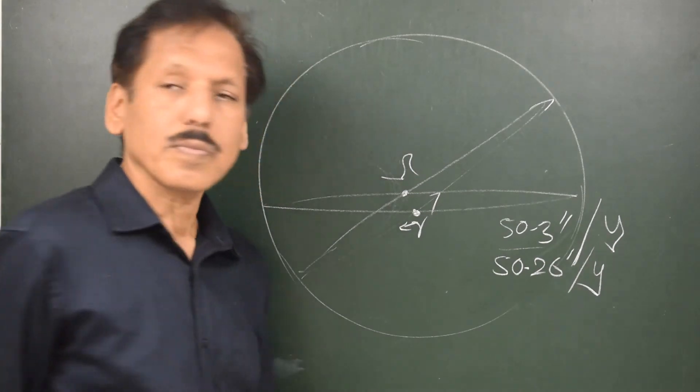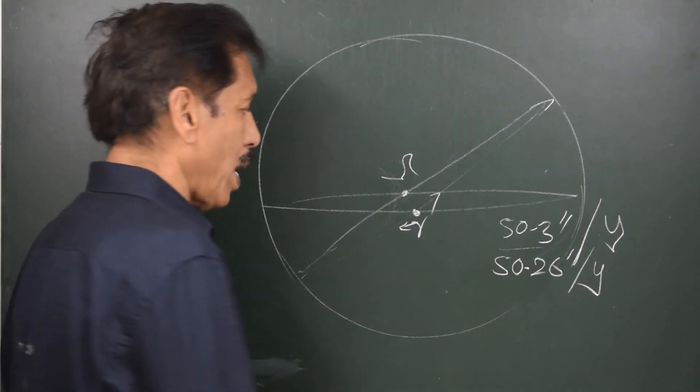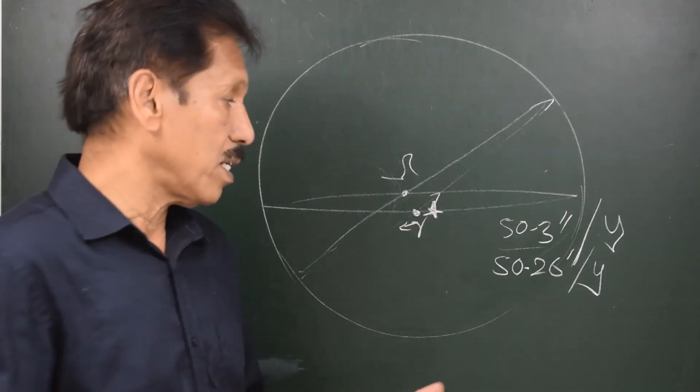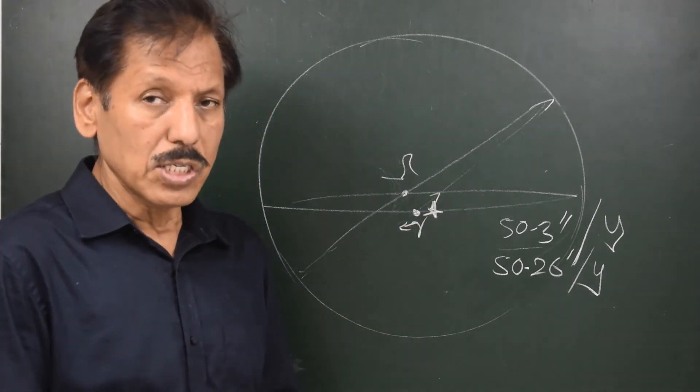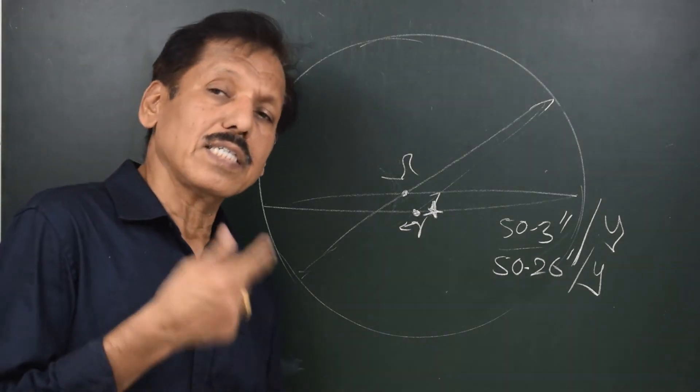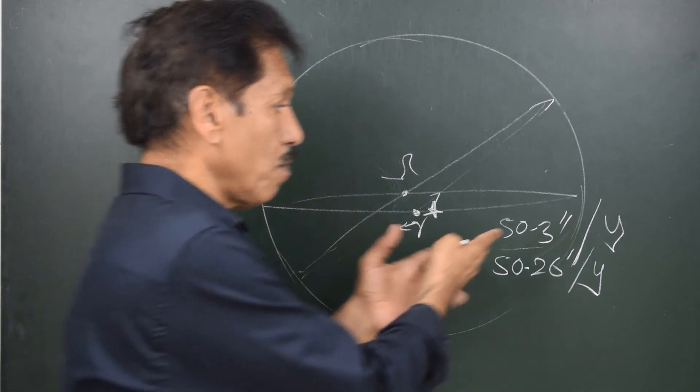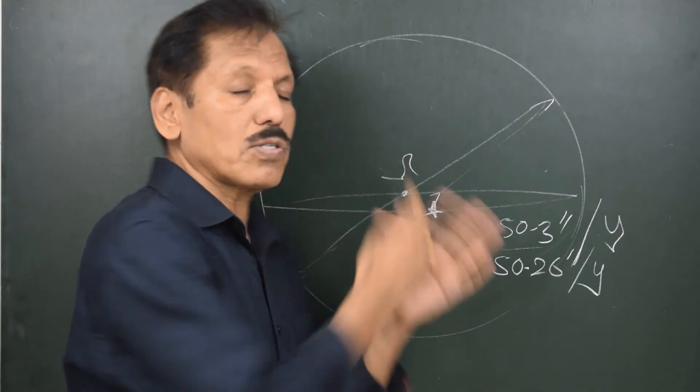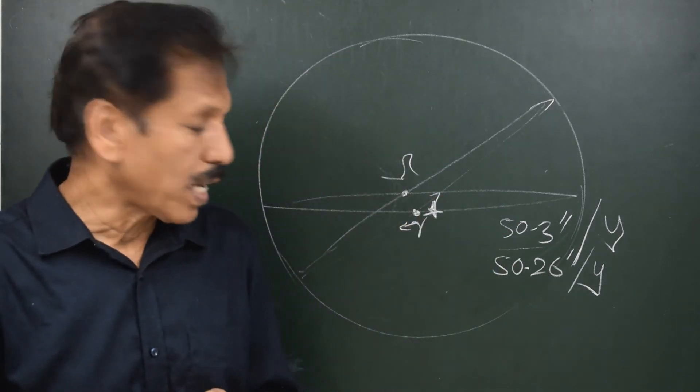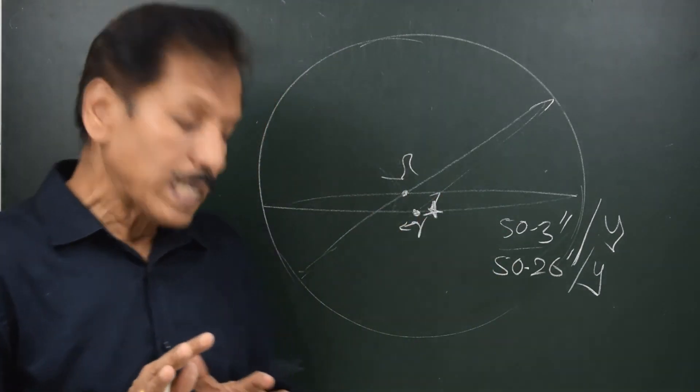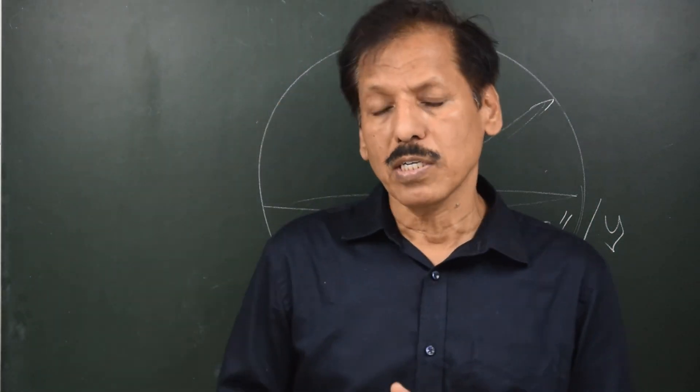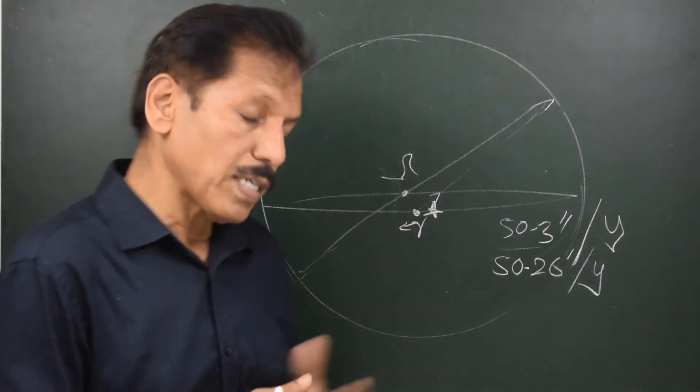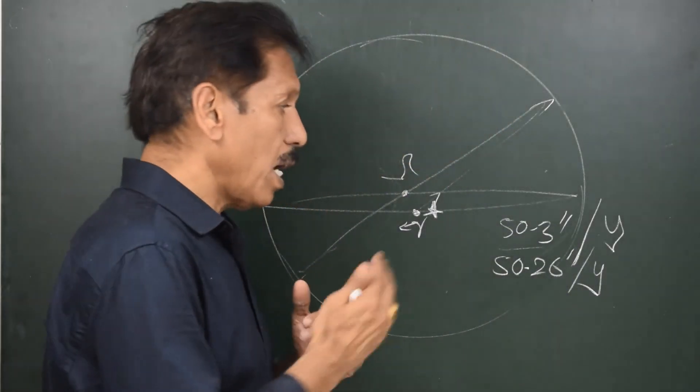Because of precession of equinox, naturally what is going to happen is suppose there is a star very close to the first point of Aries and of say for example zero declination. Now this star's SHA is going to change every year by this amount, 50.26 seconds. Now if the star has got some declination, the rate will be different. But what I want to basically tell you is the so-called fixed points in the space, stars for example, they are not fixed as far as the SHA is concerned. The SHA will gradually change because of the precession of equinox.